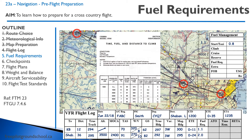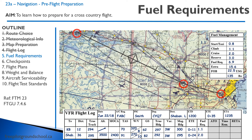Here we go with our fuel management. If we fill out the fuel management part of the flight log — starting taxi is 0.8 gallons, and you might be wondering where that is. That's note one on the time fuel distance — it tells you to add 0.8 gallons. Then I fill out the rest of the fuel management log with the information from the performance section.